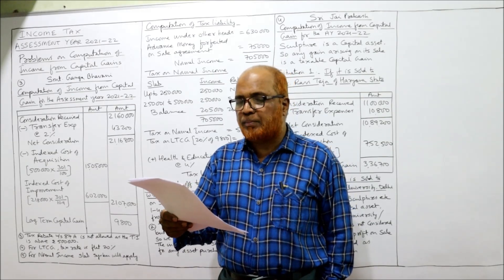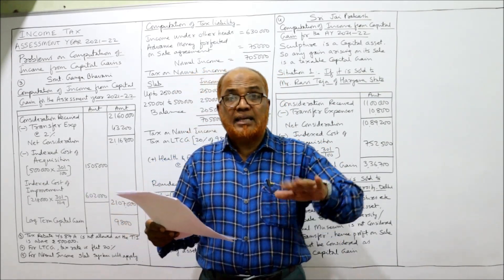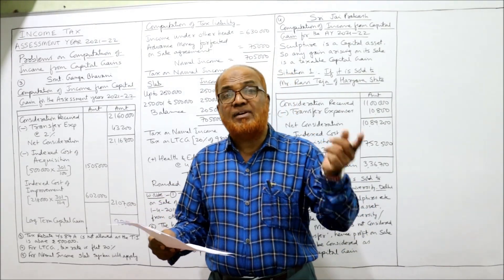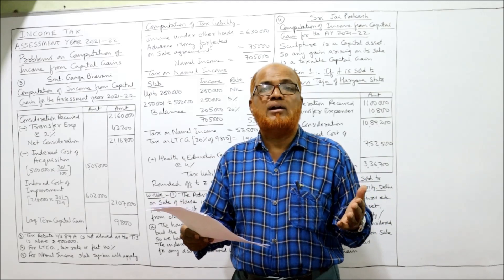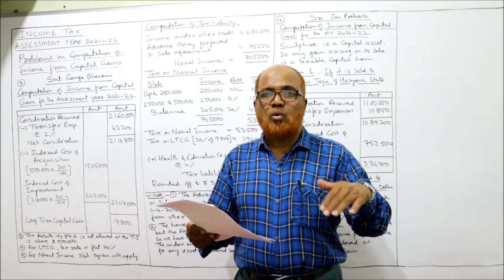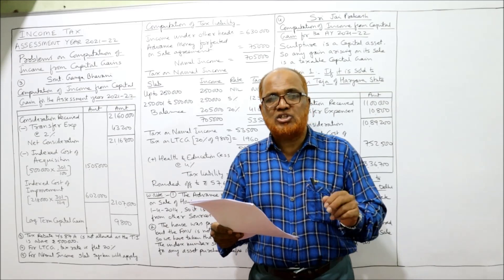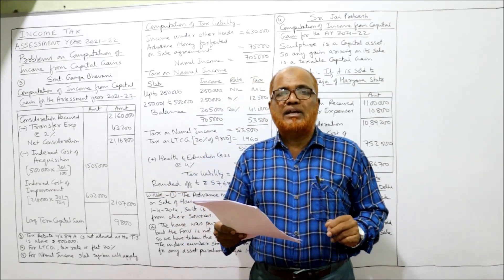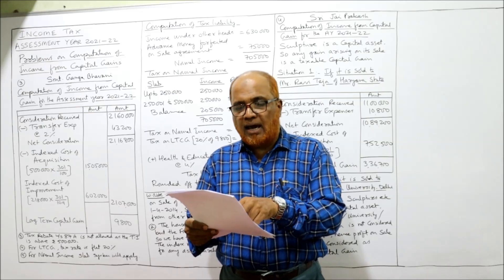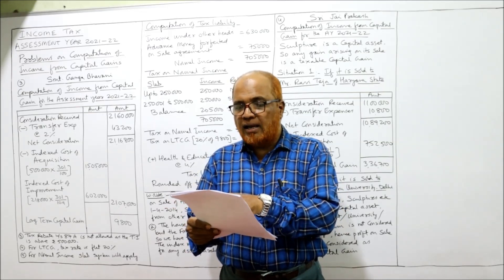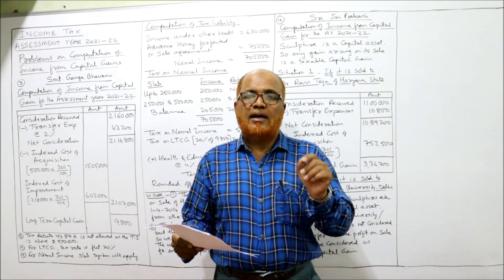On 15th May 2020, she entered into a contract with Dr. Hari to sell the house for rupees 22 lakh 30,000 and received rupees 75,000 as advance. The cost of improvement is rupees 2 lakh 18,000, made in 2003-2004, when two extra rooms were added. Later, Dr. Hari decided not to purchase the house, and the advance of rupees 75,000 was forfeited on 12th December 2020.